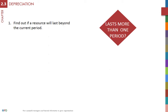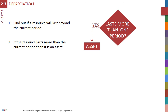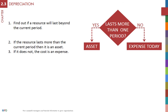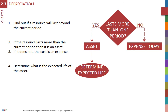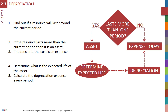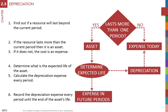Costs that last more than one period are assets. Otherwise, they are expenses. Assets become expenses through depreciation that depends on the value of the asset, its expected life, its terminal value, and the depreciation method.